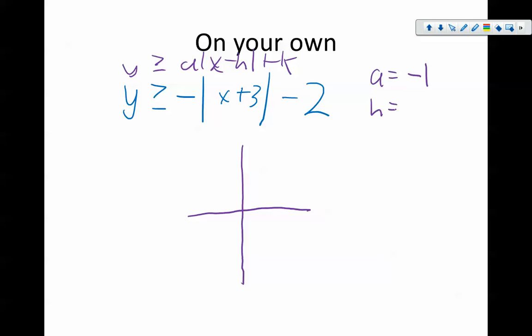My h value is negative 3. Remember, plugging negative 3 in for h makes x minus negative 3, which is x plus 3. And my k is negative 2. So this tells me to go left 3, down 2, slope negative 1.